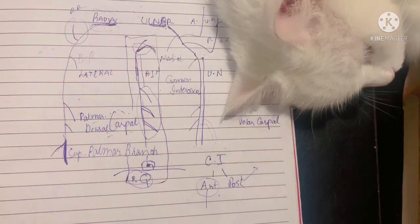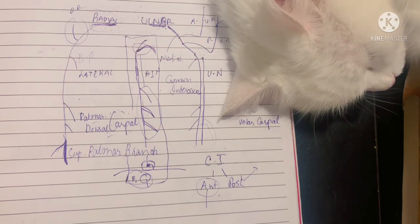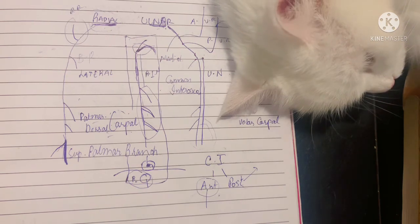This concludes the discussion of the main arteries of the front of the forearm. Join me in the next video where I discuss the arteries of the hand and the superficial and deep palmar arches.